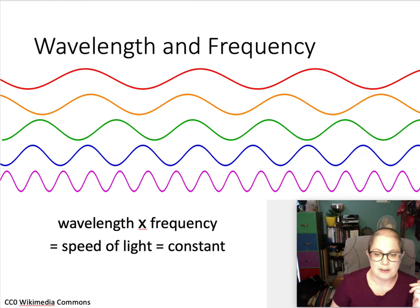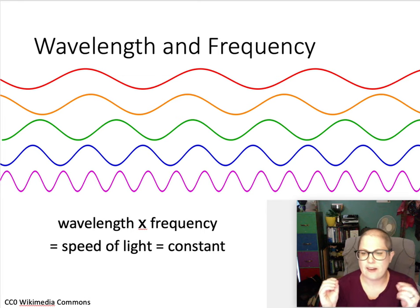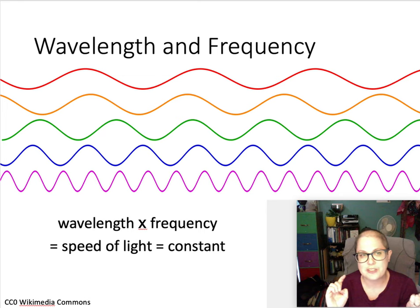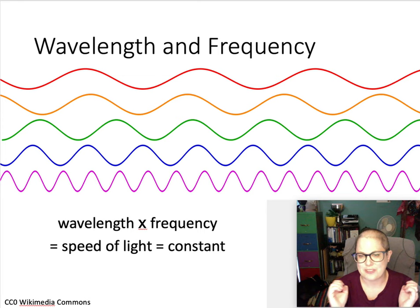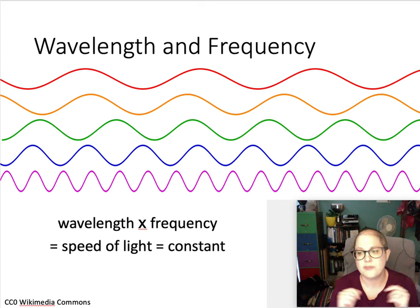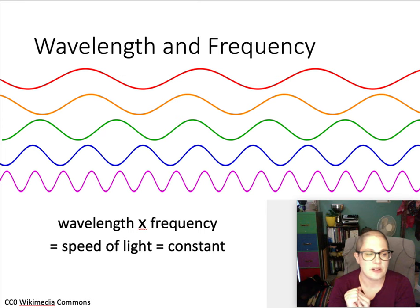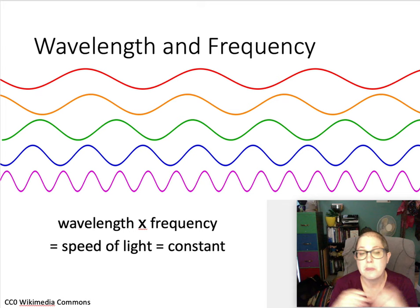As far as visible light is concerned, red has the longest wavelength and you go through the whole spectrum down to purple, which has the shortest. Astronomers use both wavelength and frequency to describe the light they're viewing. Radio astronomers tend to work in frequency for historical reasons, while in optical astronomy you see more people talking about wavelength. But if you have one, you can always find the other because you know the speed of light.